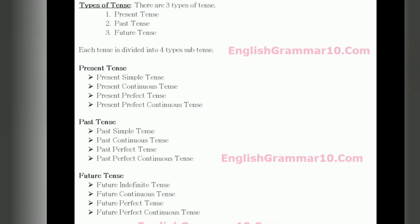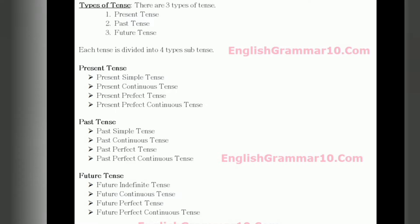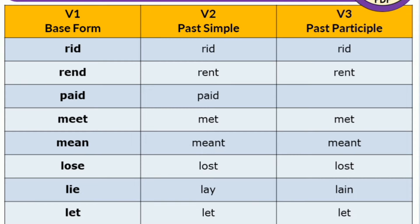Present tense is divided into four: simple present, present progressive, present perfect, and present perfect progressive. Past tense is divided into four: simple past, past progressive, past perfect, and past perfect progressive. Future tense is also divided into four: simple future, future progressive, future perfect, and future perfect progressive — totally 12 tenses.